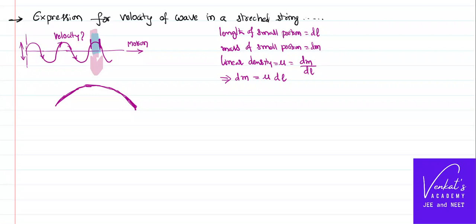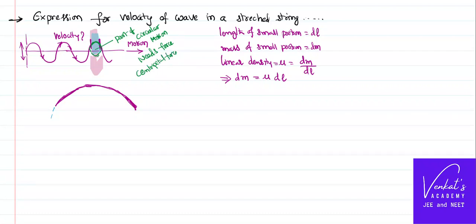The important point I would like to make is: if you notice carefully, what we have drawn is a part of a circular motion, because any oscillatory motion is actually a part of a circular motion. If I extend dotted lines from this small portion, it becomes part of a circle. Whenever there is circular motion, it needs a force called centripetal force, which is mv² by r. If I extend these lines, the circle will have a certain radius R.